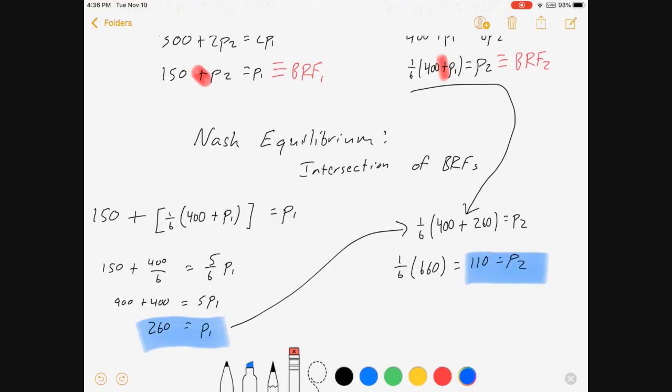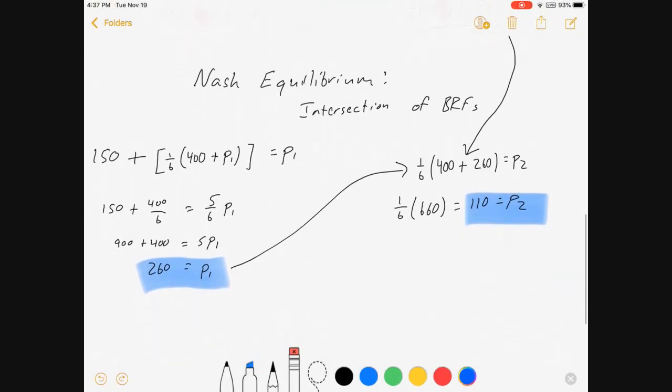Notice, both firms have the same cost. They both had a constant marginal cost of $100. And they charge completely different prices. The additional market power that comes from product differentiation lets them charge above cost. And the firm that can differentiate its product more can charge even more money.